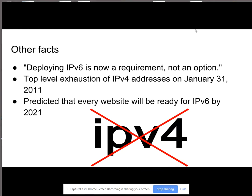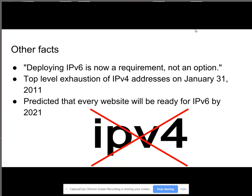Deploying IPv6 is now a requirement — it's not just an option. The top level of exhaustion for IPv4 addresses was reached on January 31st, 2011. And it's predicted that every website is going to be ready for IPv6 by 2021.